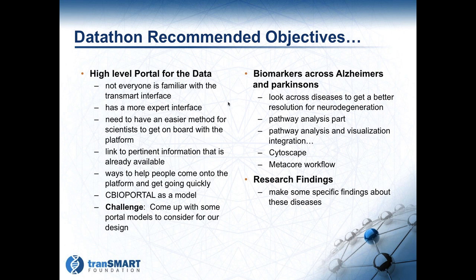As we pulled this together, the organizing committee developed three key areas we wanted to focus on as potential objectives for the meeting. The first is data access — when you're bringing together data for particular sets of analyses, how do you make this more accessible to the average scientist? TransMart is an expert system that requires some expertise to operate. One potential model is cBioPortal, which is a very interesting platform that was recently open-sourced and that we're looking to bring more closely aligned with TransMart. The challenge is to come up with portal models to consider for design.